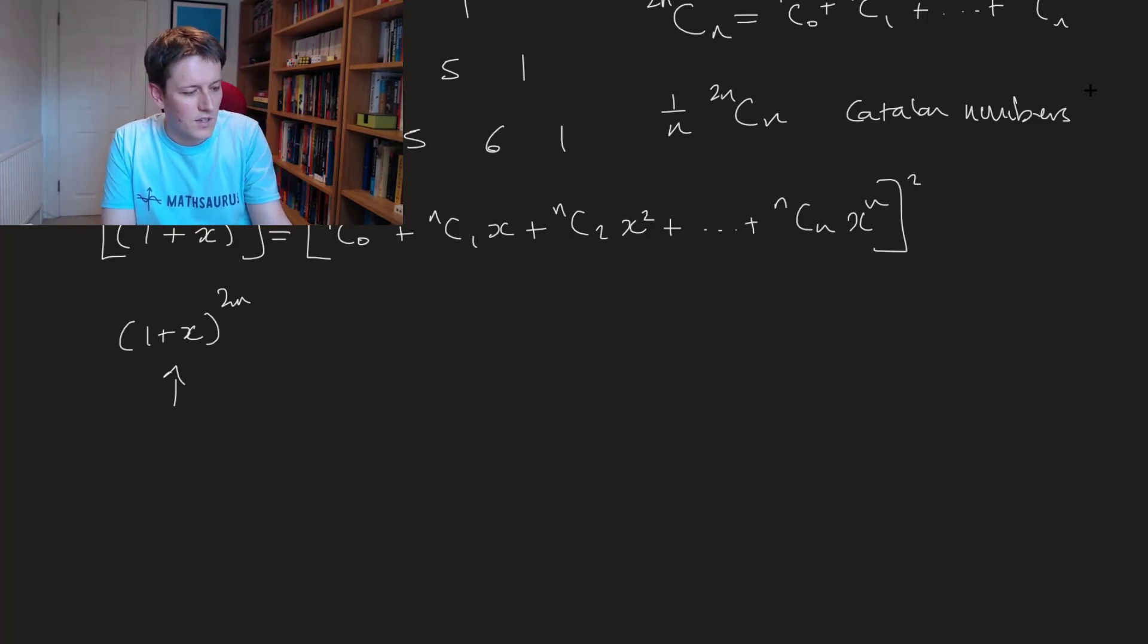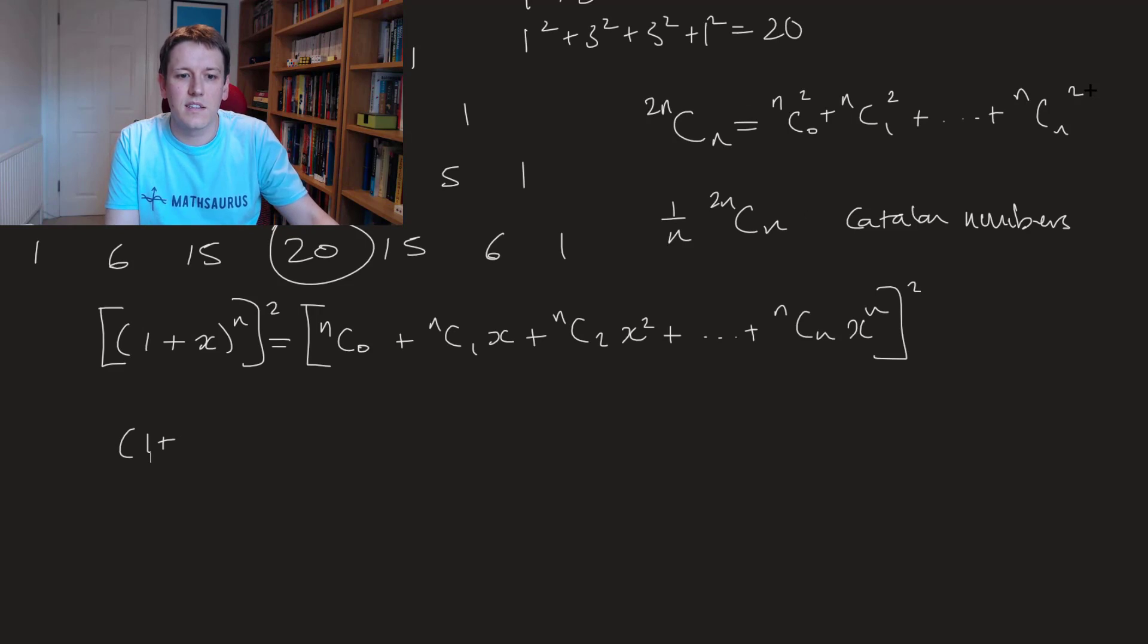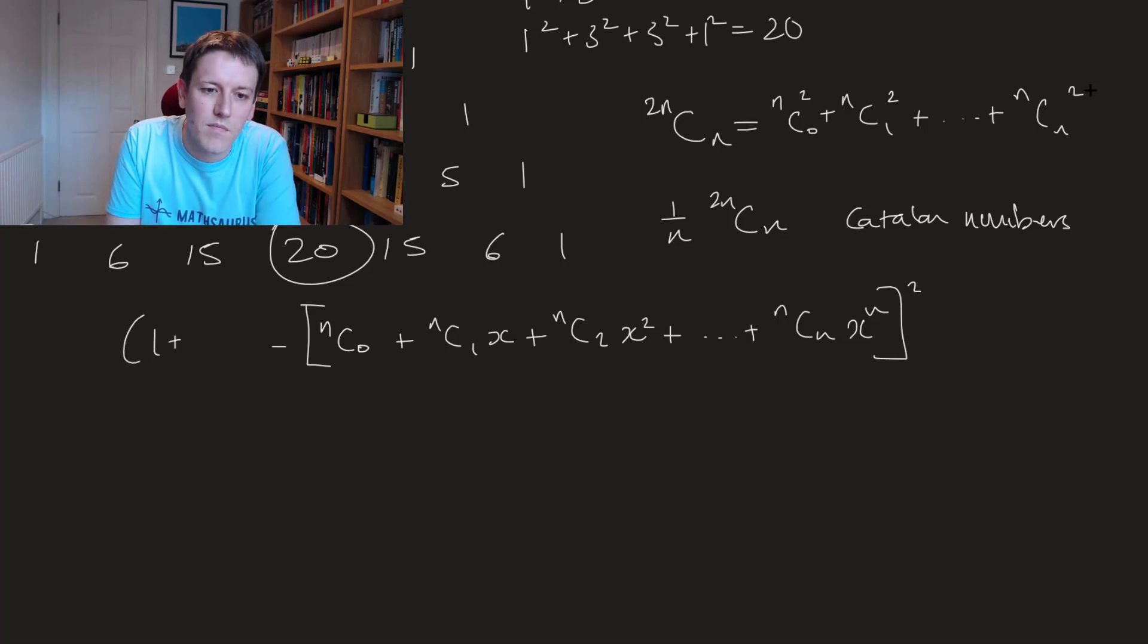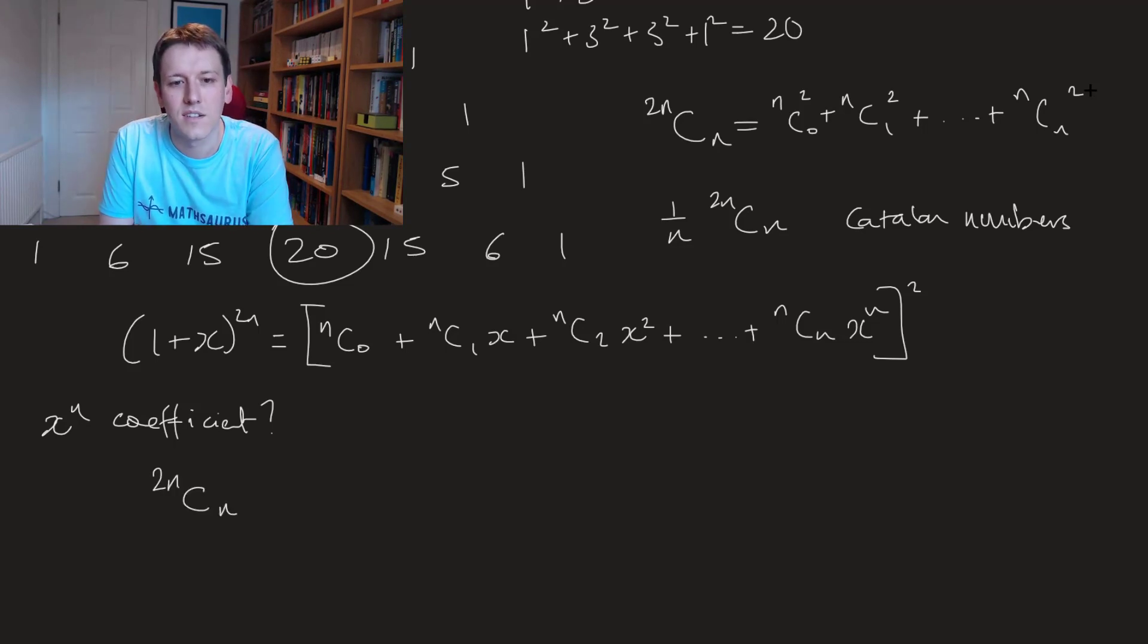So effectively what I'm going to do here is write this as 1 plus x to the 2n and now we're going to say what's the x to the n coefficient of each side of this identity. So the x to the n coefficient of 1 plus x to the 2n as we've just said is just 2n choose n.